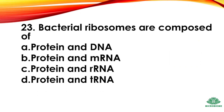Question 23: Bacterial ribosomes are composed of — options: protein and DNA, protein and mRNA, protein and rRNA, protein and tRNA. The right answer: option C, protein and rRNA.